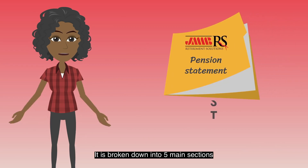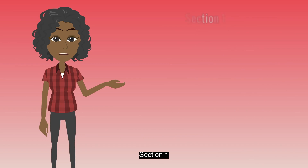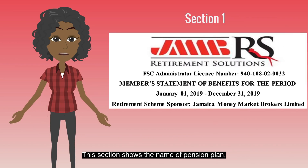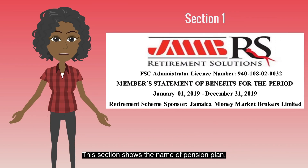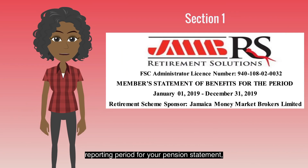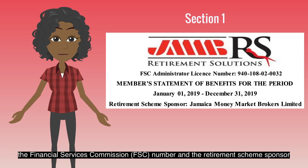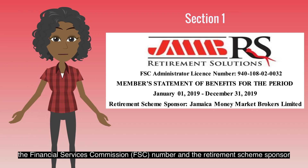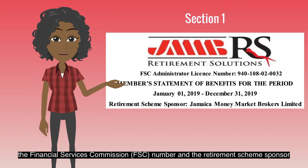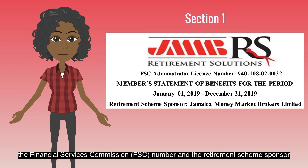It's broken down into five main sections. Section 1 shows the name of the pension plan, the reporting period for your pension statement, the Financial Services Commission or FSC number, and the retirement scheme sponsor.